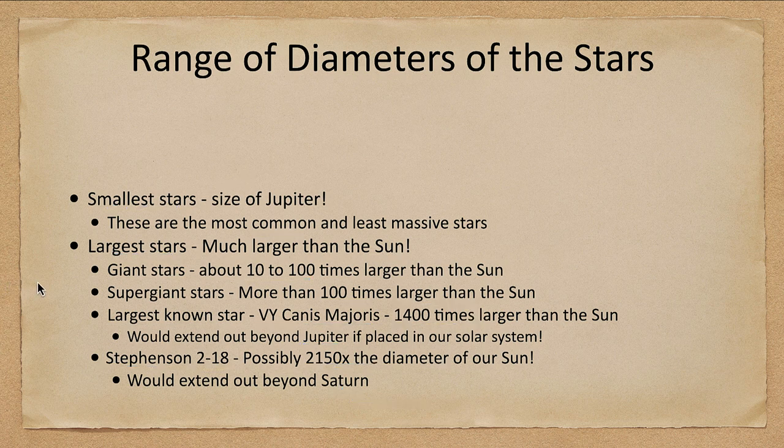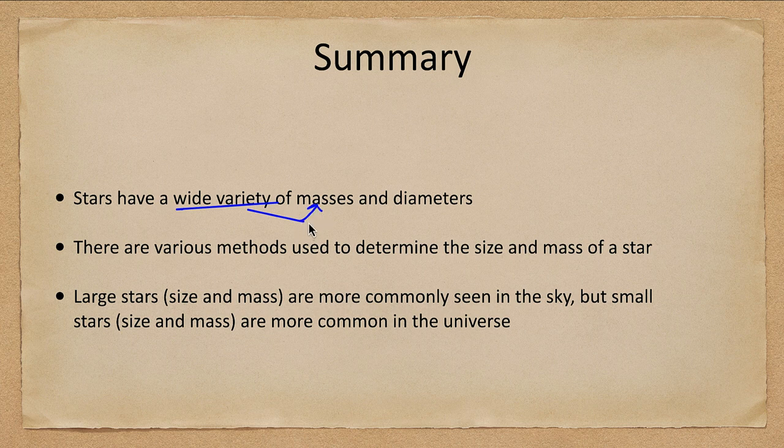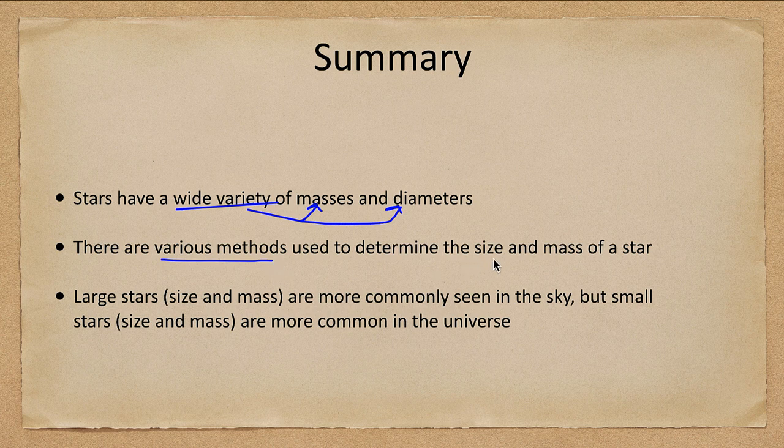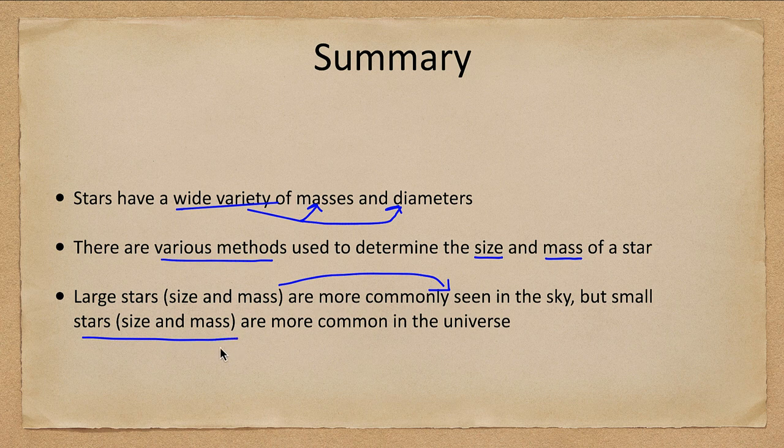So let's go ahead and finish up with our summary. What we've looked at today is that the stars have a wide variety of both masses and diameters. We've talked about various methods used to determine how big a star is and the mass of a star. Large stars are more commonly seen in the sky, but the small stars are the more common ones in the universe.